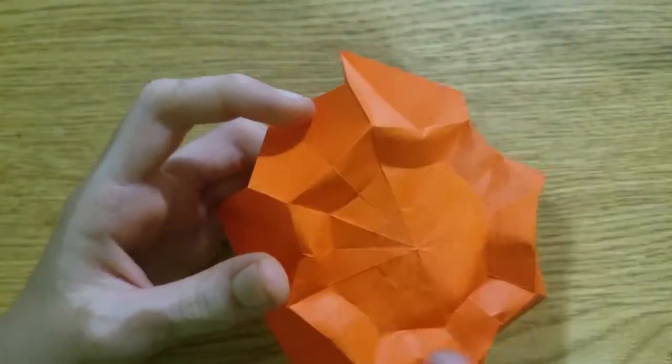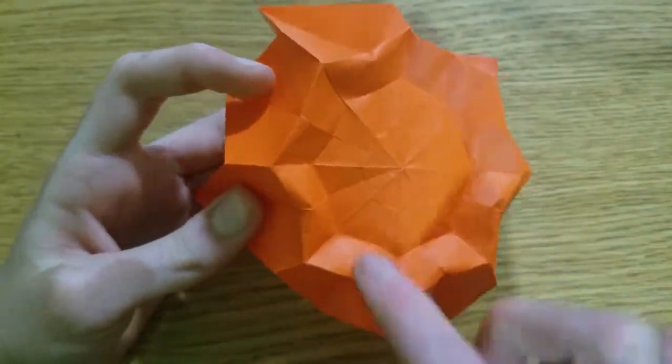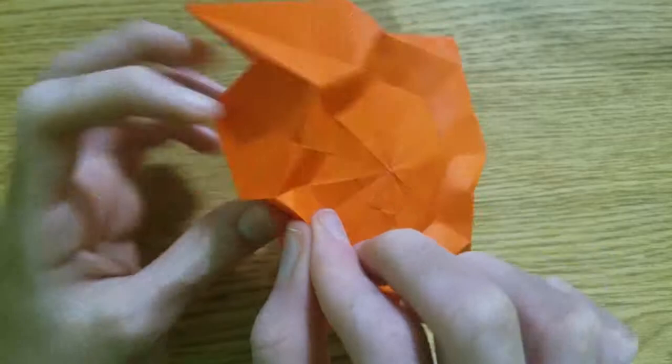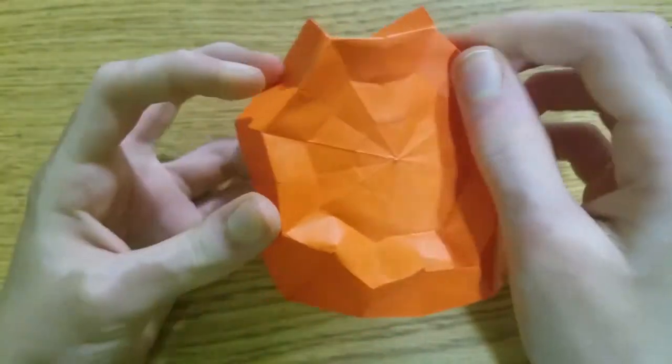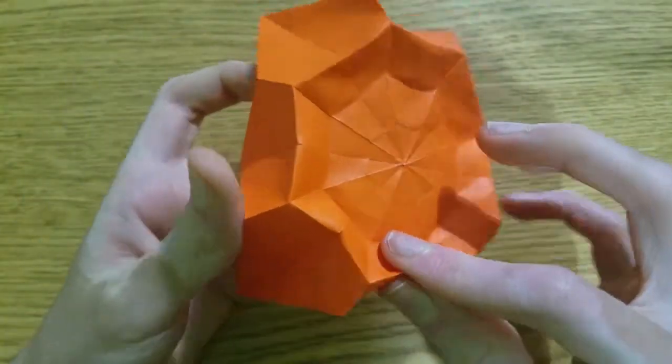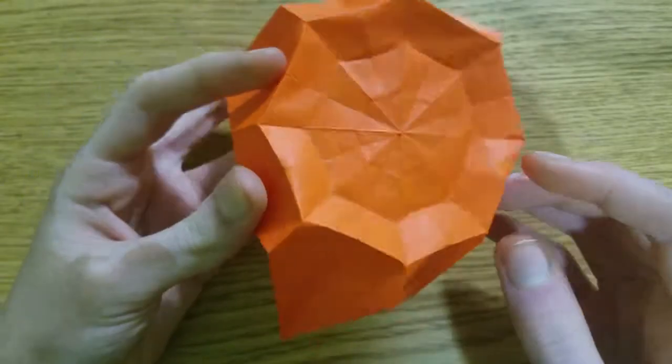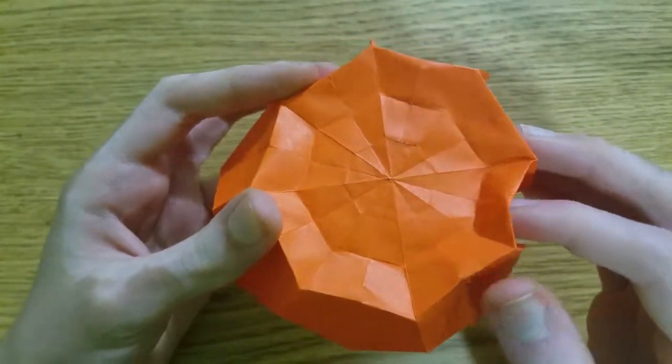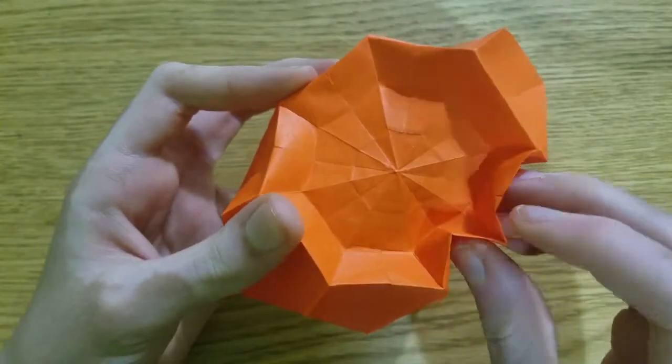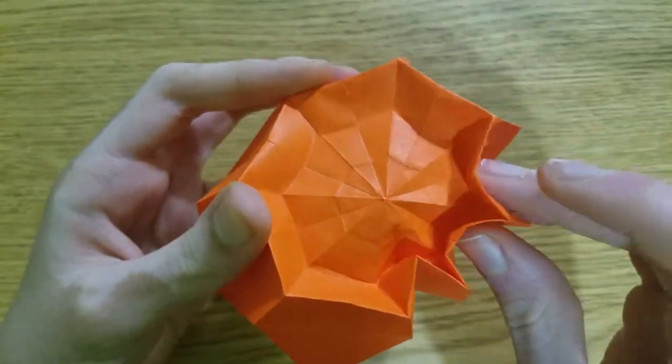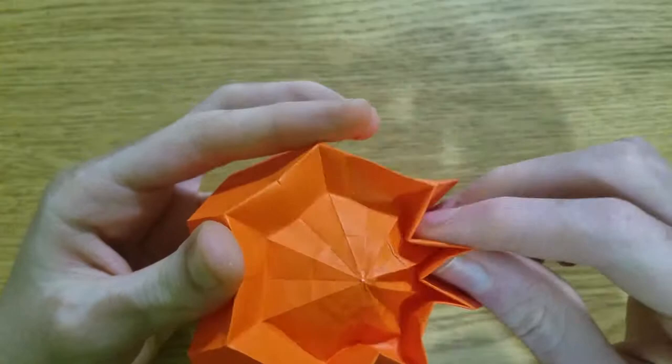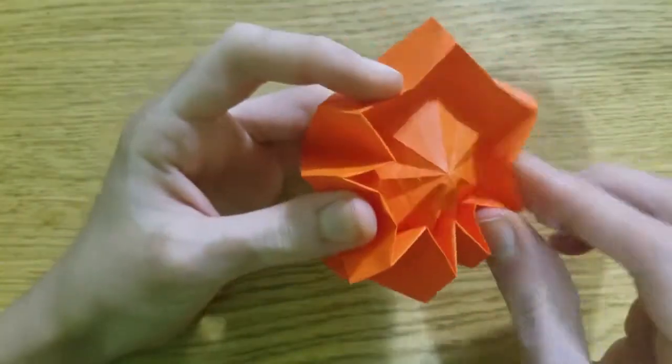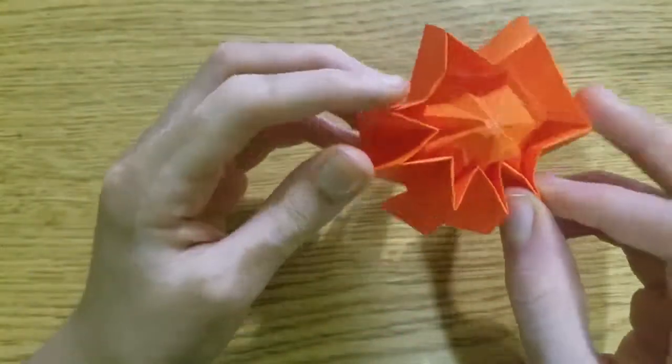Now turn over and you see we have this one mountain folded and the next one valley folded. Now we're just going to have to collapse this in. Make sure this point sticks up afterwards. So we're just going to slowly collapse along the creases that already exist. We're not creating anything new here.